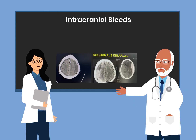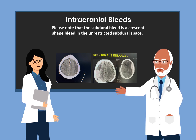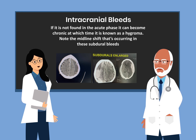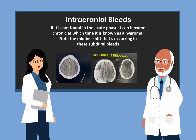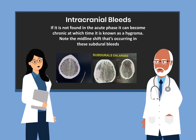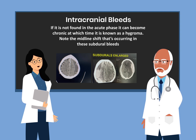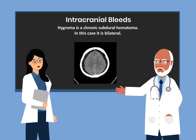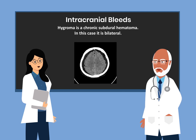Here we have classic subdural hematomas. Please note that the subdural bleed is a crescent-shaped bleed in the unrestricted subdural space. If it is not found in the acute phase, it can become chronic, at which time it is known as a hygroma. Note the midline shift occurring in these subdural bleeds. This is a classic example of a chronic subdural bleed known as hygroma, and in this case it is bilateral.